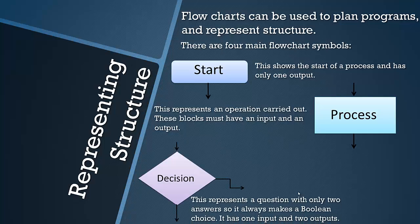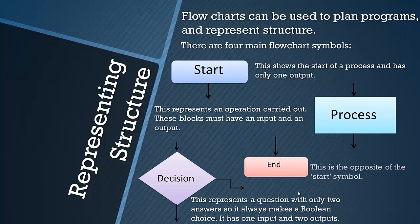Then you have a decision block so this represents a question with only two answers and therefore it has one input and two outputs and it basically makes a boolean choice, true or false as we know. We went through that in a previous video so essentially yes or no as well. And finally you have an end block which is obviously the opposite of a start symbol which means it's only got one input and no outputs.